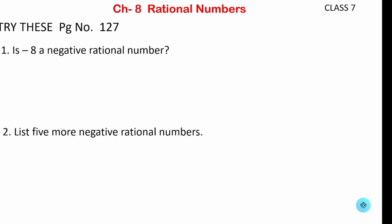Hello everyone, welcome back. We will see today 'Try This' of page number 127. Previously we have seen 'Try This' of this chapter on rational numbers. The first question is: is minus 8 a negative rational number? A rational number is in p upon q form. Here we have minus 8, and the denominator is nothing, so we suppose it as 1. Since we have a minus sign, yes, it is a negative rational number.